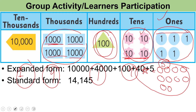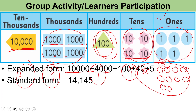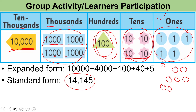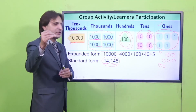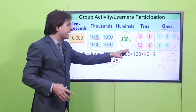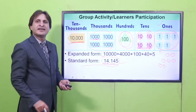When we write in numeric form: for example one ten thousand, plus the others — when we add all their place values together we get one number. We read it as: ten thousand and four thousand, so we get fourteen thousand one hundred forty-five. This is the expanded form: each place's particular digits are added together. When we write the combined answer, that becomes the standard form.